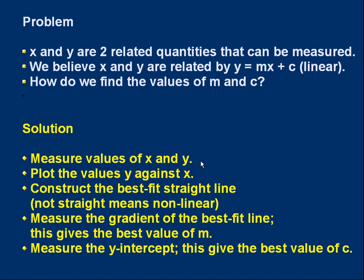The solution is this. We measure values of x and y. We plot the graph y against x. We construct the best fit straight line. If it's not a straight line, we might get a curve. It means that relationship isn't applicable. It's a non-linear relationship. But if we get a straight line, we can then measure the gradient of the best fit straight line. And the gradient gives us our value m. We then measure the y-intercept, and this gives us our value c. That's the technique.